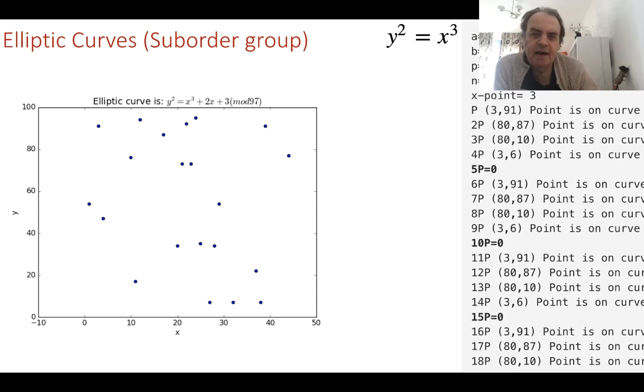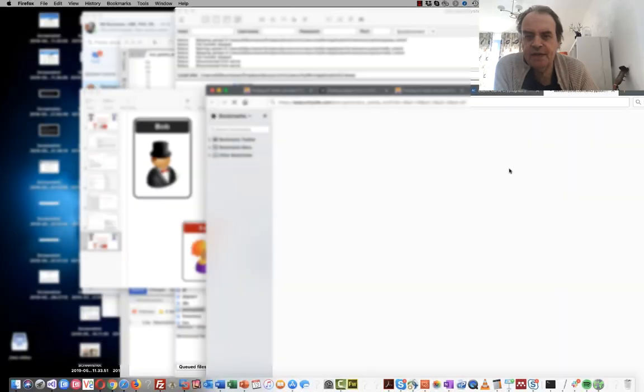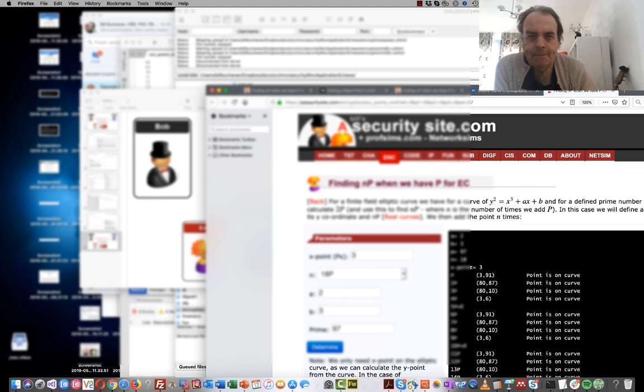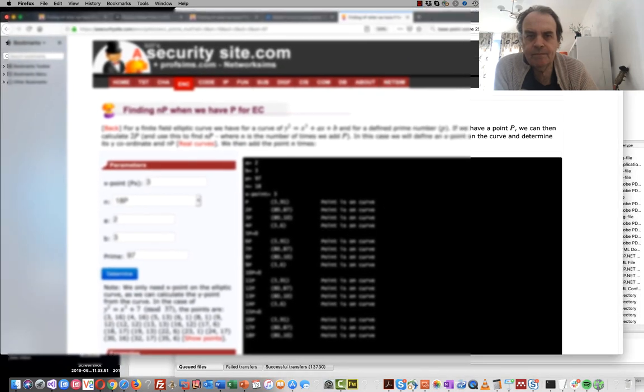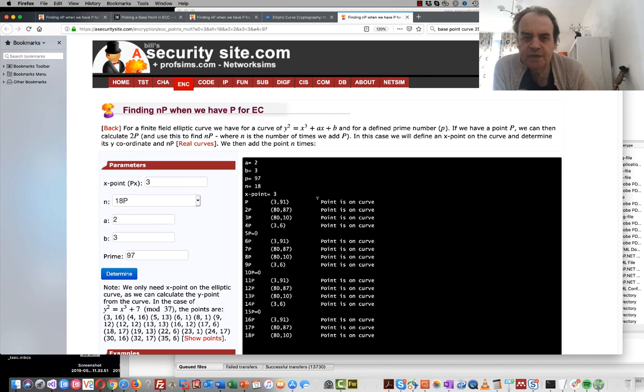If we pick a value of three on this curve here, so this is a is two and b is three with a prime number of 97, we can see here what happens when we run this.